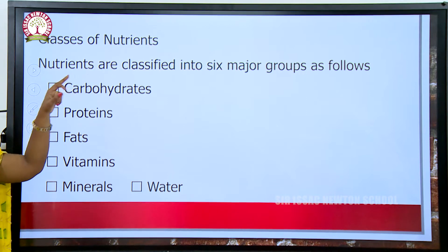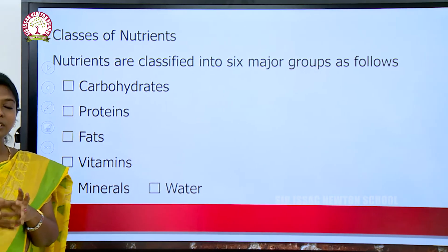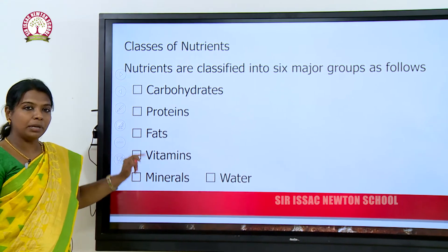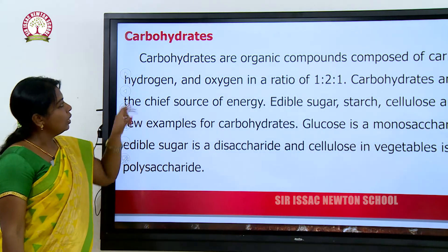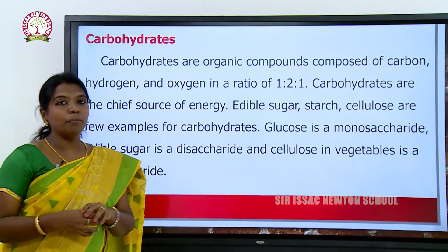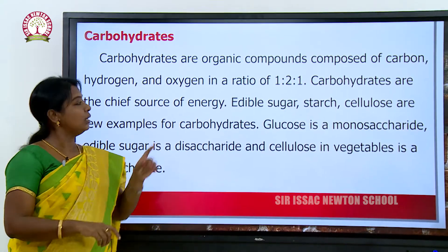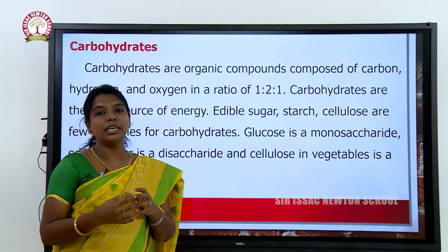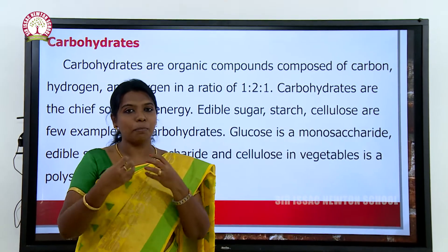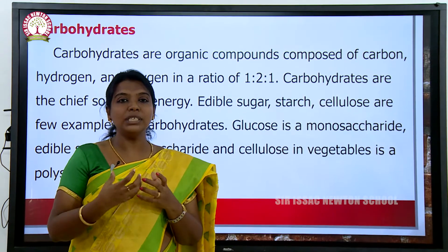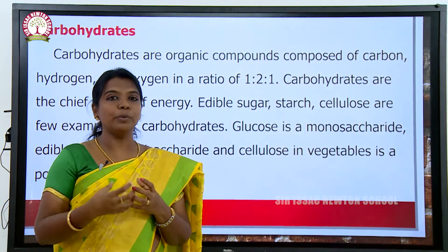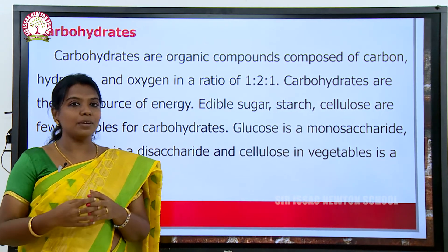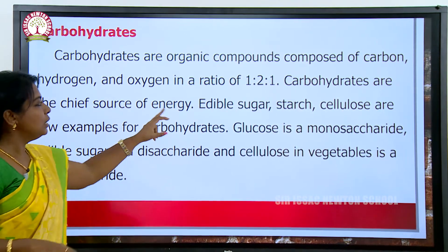Classes of nutrients: nutritious food contains carbohydrates, proteins, fats, vitamins, minerals, and mainly water. Carbohydrates are organic compounds composed of carbon, hydrogen, and oxygen in the ratio 1:2:1. They are the chief source of energy. Especially in our country, we take rice as our main food, and carbohydrates are the main component of rice.